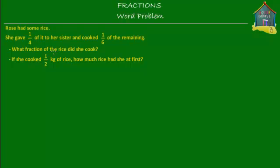Welcome to homecampus.com.sg. Here's a word problem. Rose had some rice. She gave a quarter of it to her sister and cooked one-sixth of the remaining. What fraction of the rice did she cook?